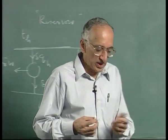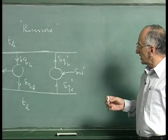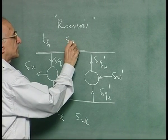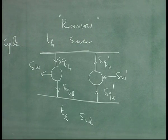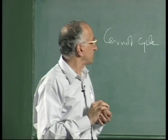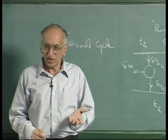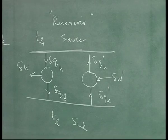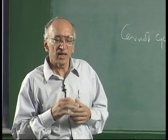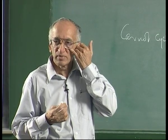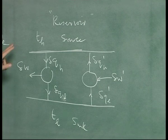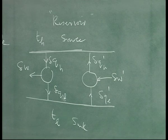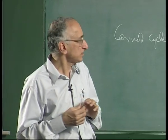He made a statement based on experience: it is impossible to take heat from a source, go through a process, and return the heat to the same source such that this net heat is completely converted to work. He said you cannot leave the state of the universe the same, go through a cyclic process, and completely convert heat to work. That is the assumption. With that assumption he is going to give you a proof, and the proof is trivial.